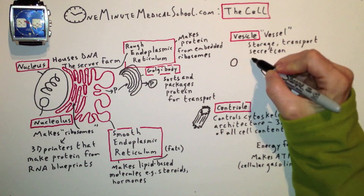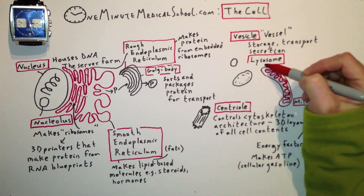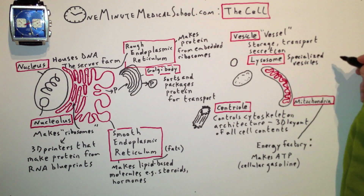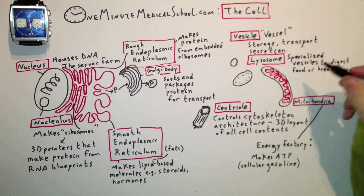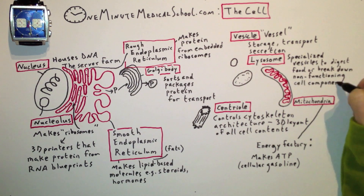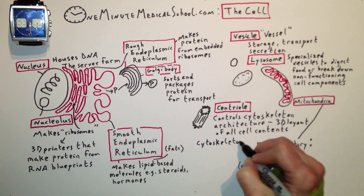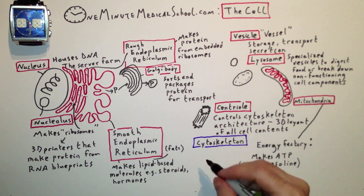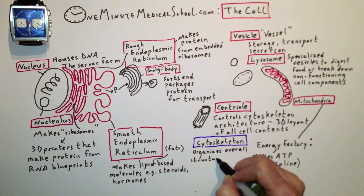Vesicles are vessels for storage, transportation, and secretion. Lysosomes are specialized vesicles for digestion of food and breakdown of old worn-out cellular parts.